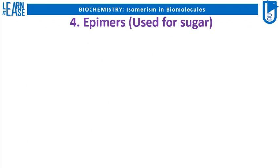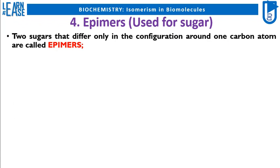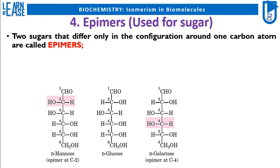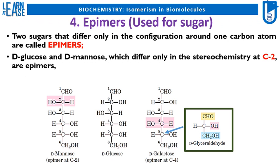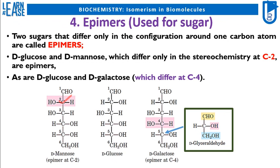The fifth subtype of configurational isomers is epimers; this isomerism is mainly found in sugars. Two sugars that differ only in the configuration around one carbon atom are called epimers. D-glucose and D-mannose, which differ only in the stereochemistry at C2, are epimers. The image shows the structures of D-mannose, D-glucose, and D-galactose. All three sugars are D-isomers as the fifth carbon has orientation of H and OH groups similar to the chiral carbon of D-glyceraldehyde, where OH is on the right and H on the left. D-mannose is an epimer of D-glucose as the stereochemistry at C2 is different. Similarly, D-galactose is an epimer of D-glucose as the stereochemistry at C4 chiral carbon differs in the orientation of H and OH groups.